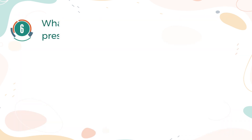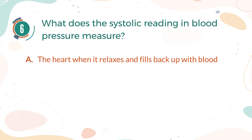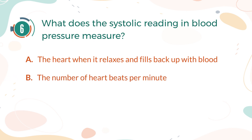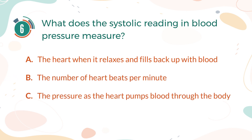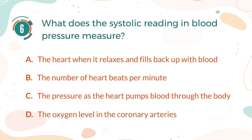Number 6. What does the systolic reading in blood pressure measure? A. The heart when it relaxes and fills back up with blood. B. The number of heartbeats per minute. C. The pressure as the heart pumps blood through the body. D. The oxygen level in the coronary arteries.